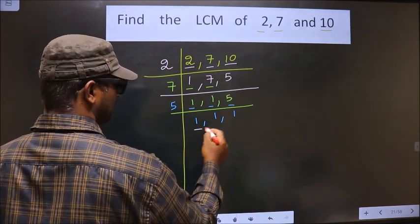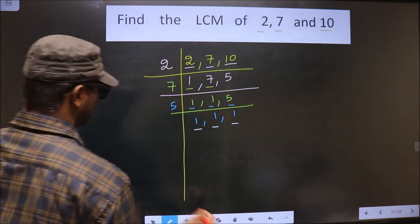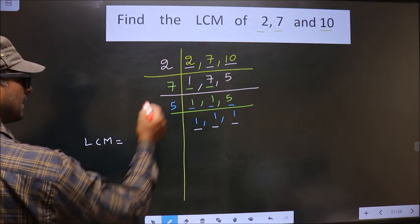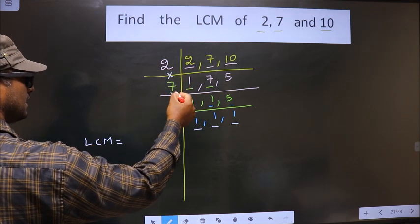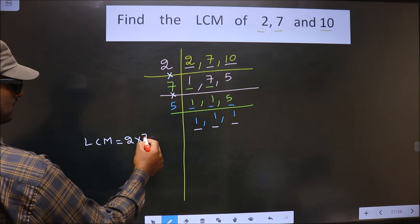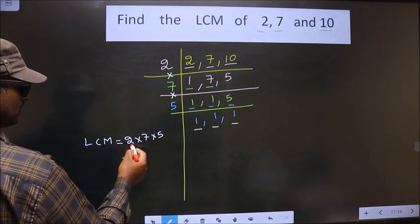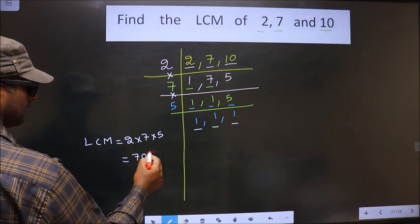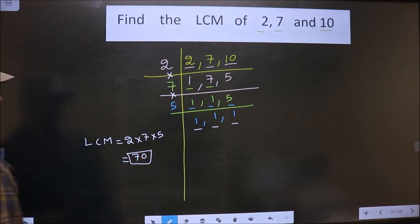Now we got 1 in all the 3 places. So now our LCM is the product of these numbers. That is 2 into 7 into 5. So 2 into 7 is 14. 14 into 5 is 70. So this is our answer.